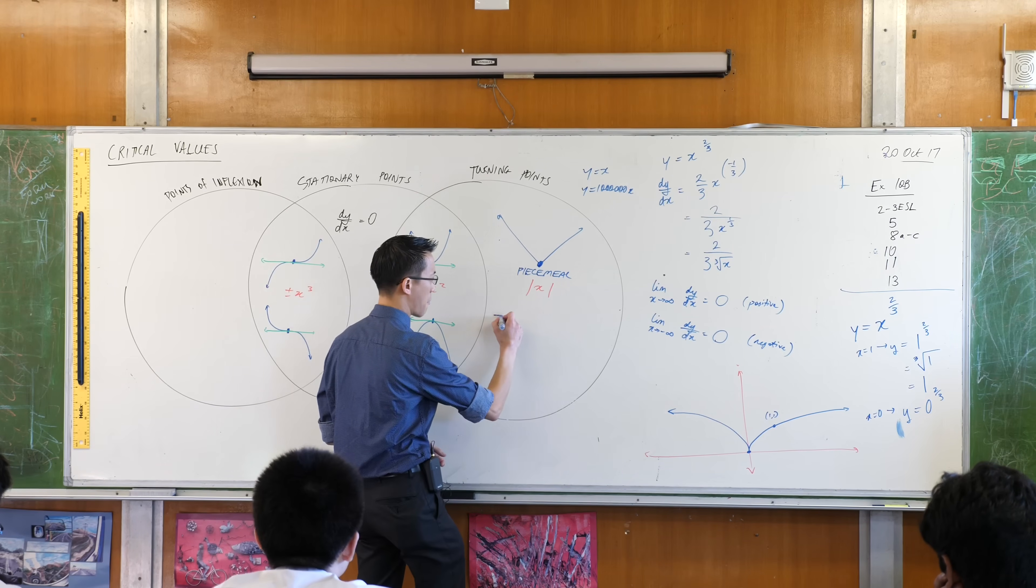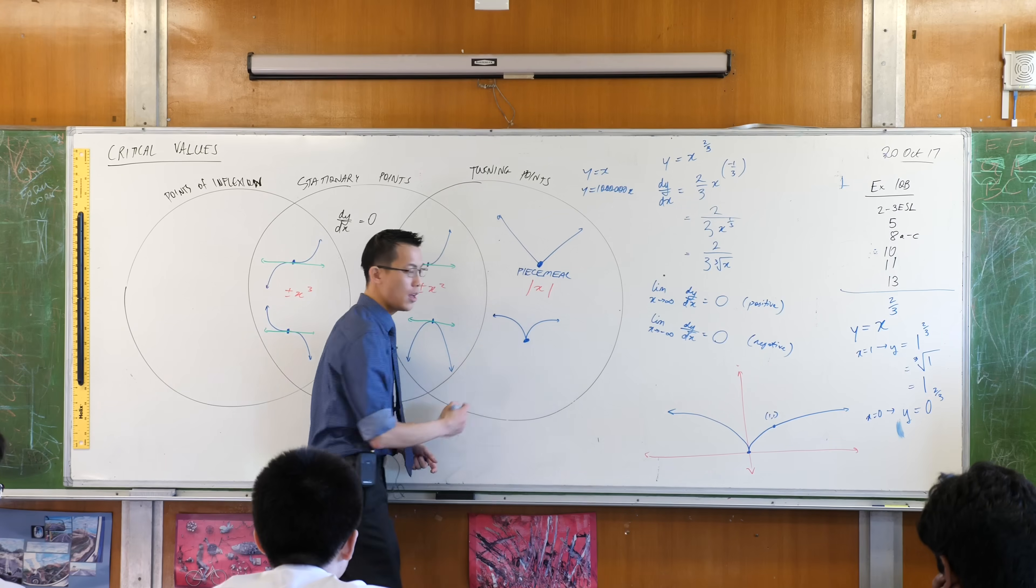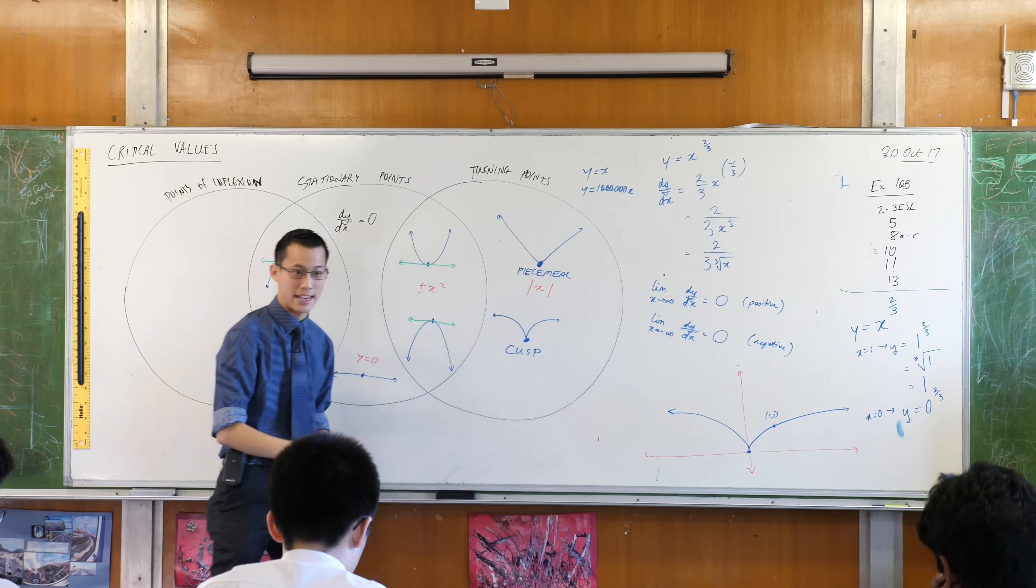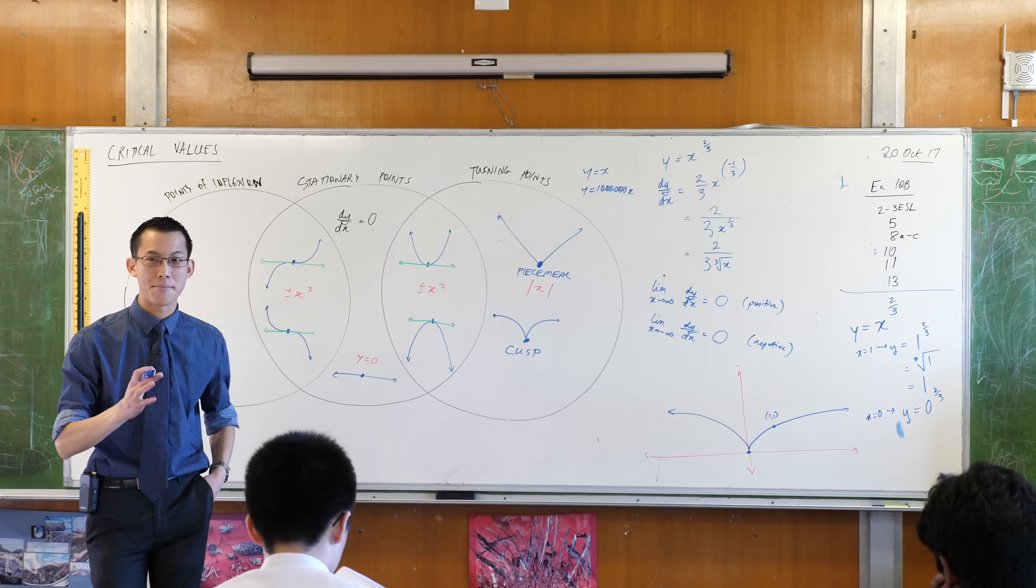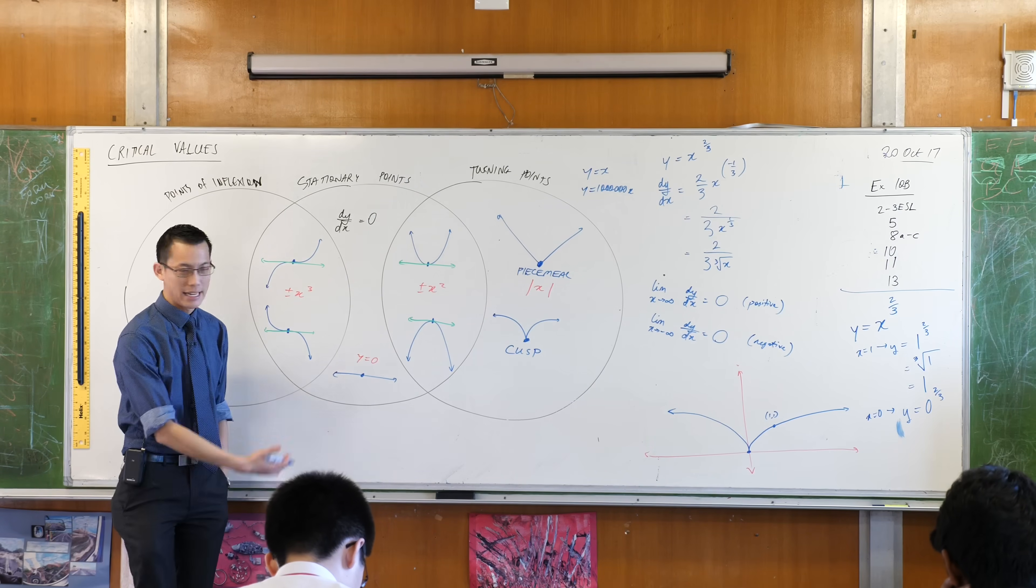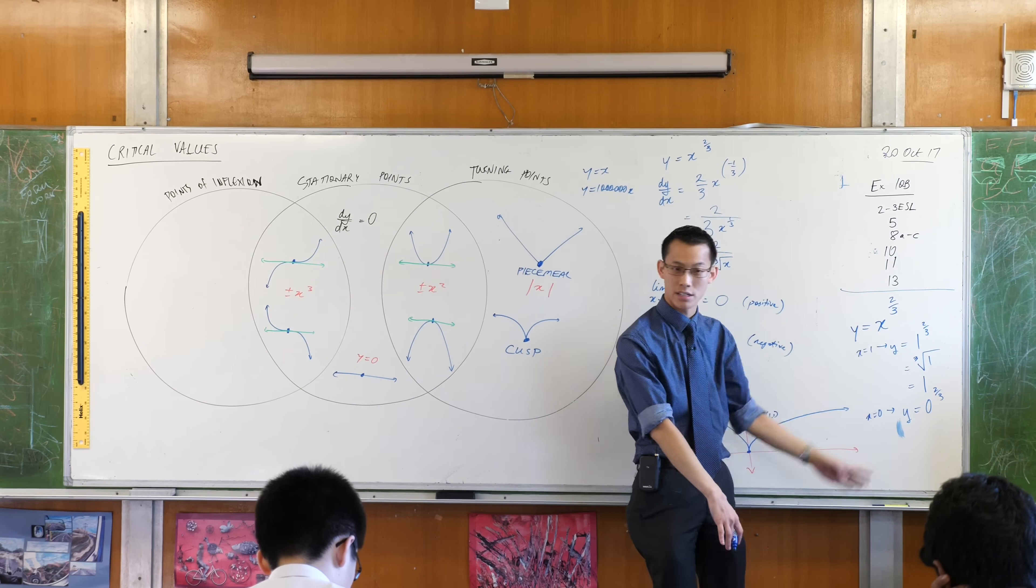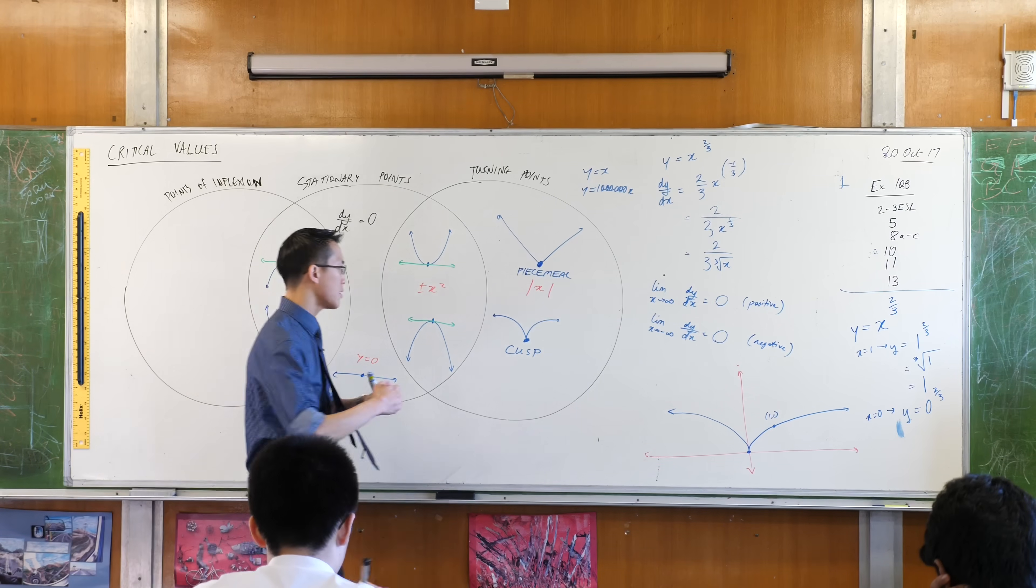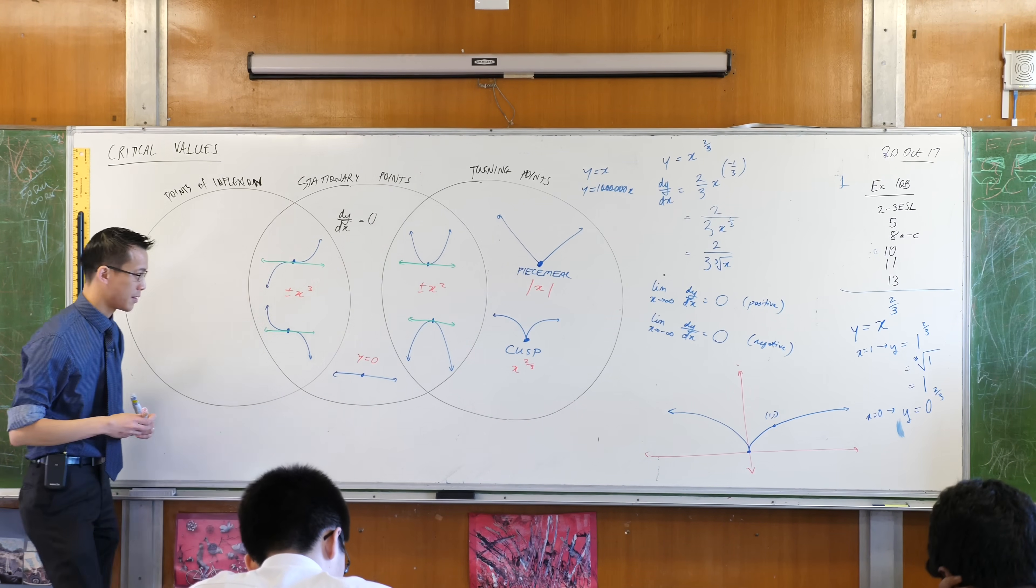We call this object, you can add this to your Venn diagram now. We call this object a cusp. C-U-S-P. Okay? It's a cusp. To be fair, it is a very, very mathematically uncommon object. Doesn't happen a whole lot, but it does happen. And, in fact, you don't need something weird and complicated to create it. You guys can understand all of that. Okay? So, if you want to put your example there. X to the power of two-thirds is the most common example that gets pulled out. Okay?